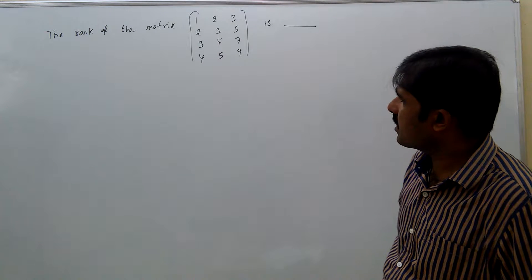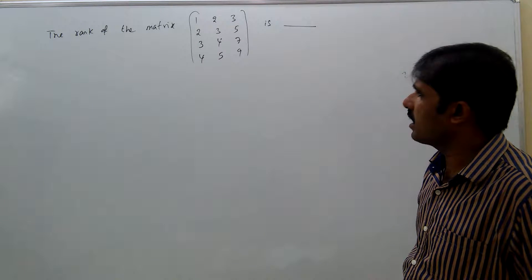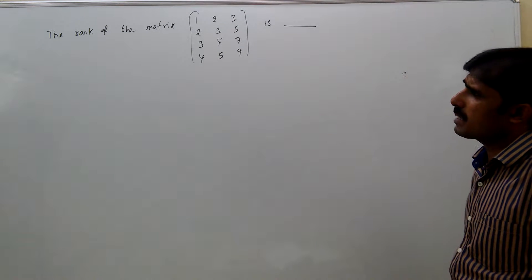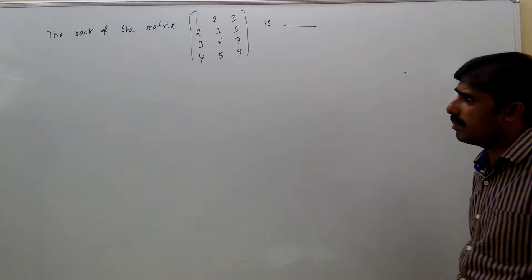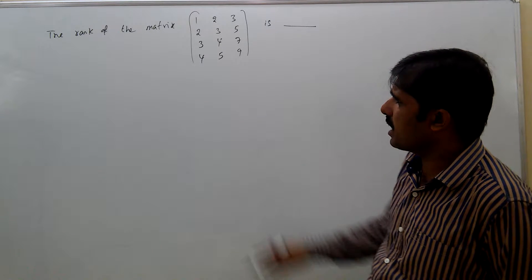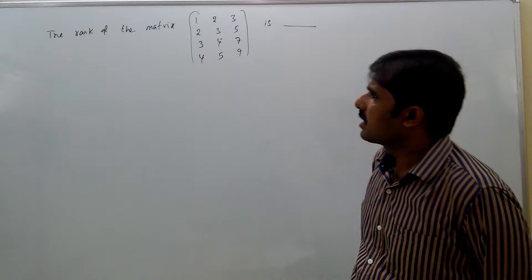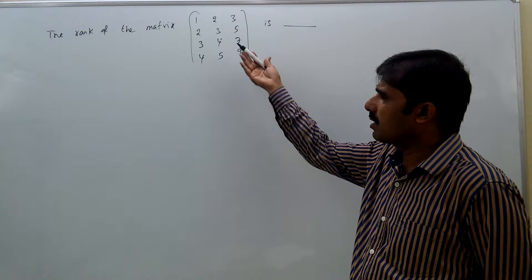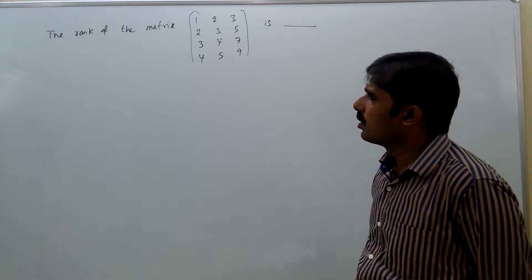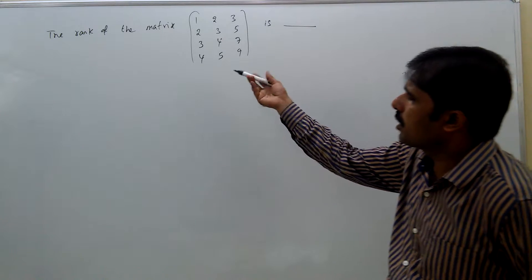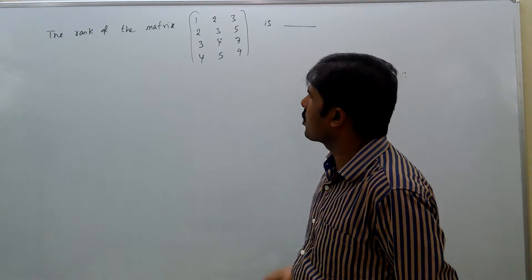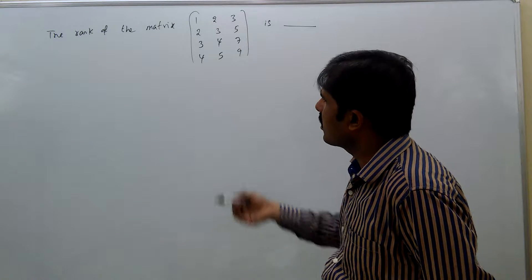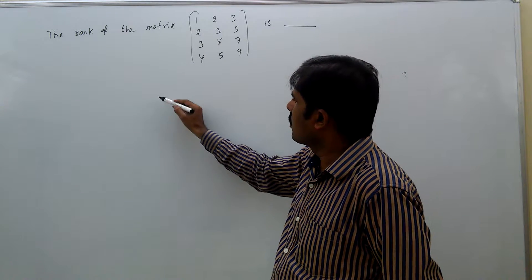The matrix is 4 by 3. A 4 by 3 matrix means the rank can be a maximum of 3rd order — maximum rank possible is 3 only. Maybe rank may be 1 or 2 or 3, we don't know. But we need elementary row transformations to get the rank of this matrix.